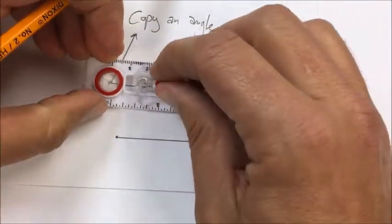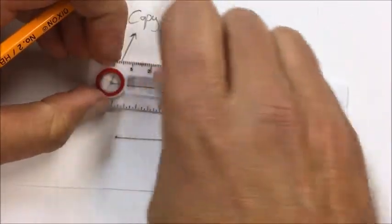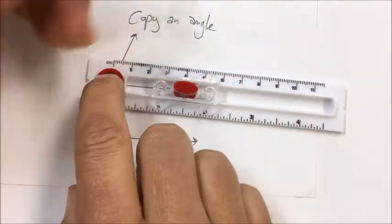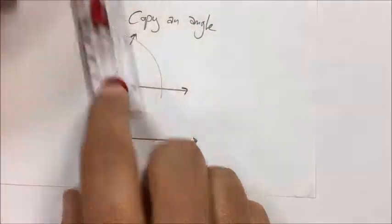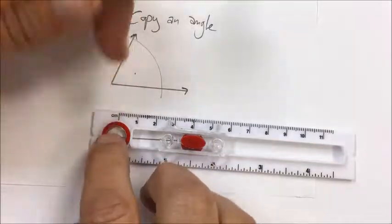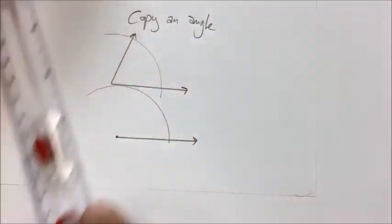Now next I'm just going to put my compass at some length, just arbitrary, and I'm going to arc it off on here. And so then what I'll do is I'll arc it off on here as well. Same arc like that.